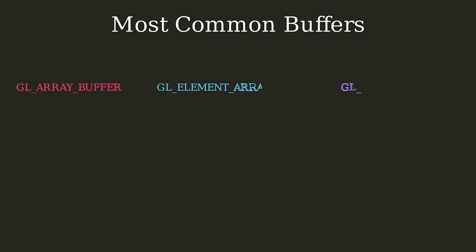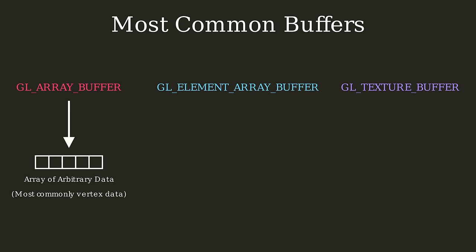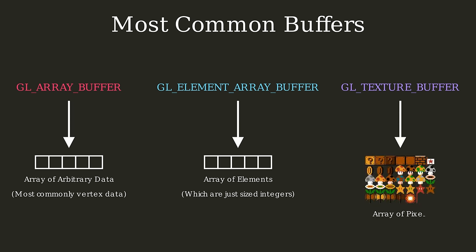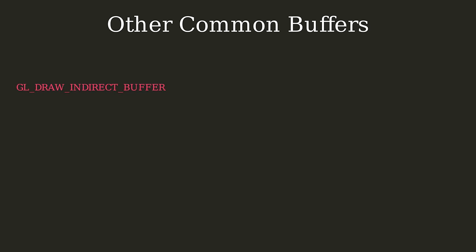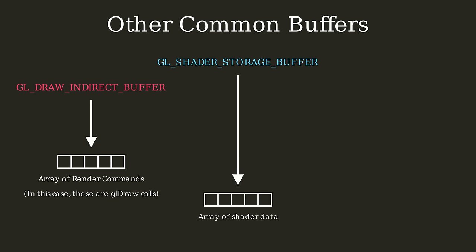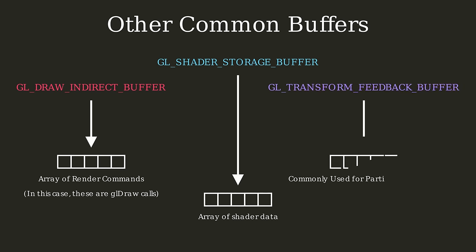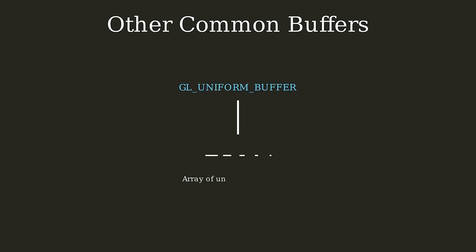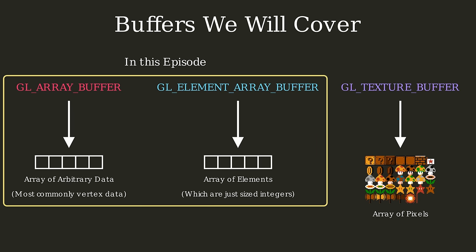These buffers represent an array of data, elements, or textures — usually just an image like a PNG or JPEG. There are many other types of buffers as well, including GLDrawIndirectBuffer for storing rendering commands, GLShaderStorageBuffer for passing data to shaders, GLTransformFeedbackBuffer commonly used for complex GPU calculations like particle simulations, and GLUniformBuffer for passing data to shaders. We'll talk about the array buffers and element buffers in this video, and the texture buffer once we get to the episode on textures.